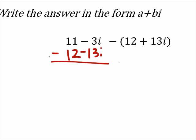Okay, well, let's proceed like this. So 11 minus 12 would be a negative 1. And then I've got negative 3i minus 13i, which would be a negative 16i.